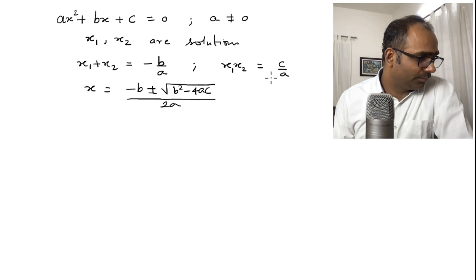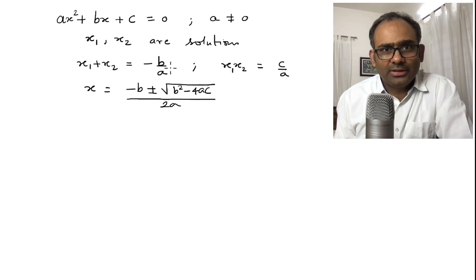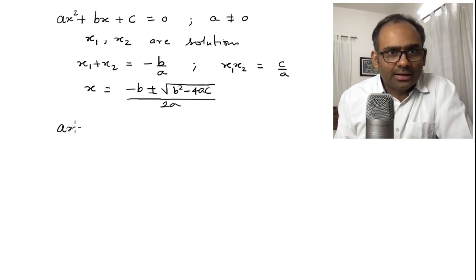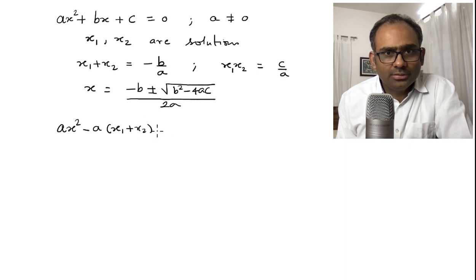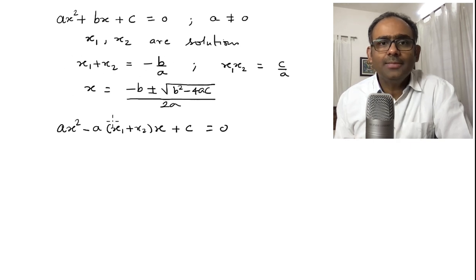Now what I do is I take this property and put it in here. What is b? b is minus a times x1 plus x2 from this relation. I will put it in there. So, I get ax square minus a times x1 plus x2 x plus c is equal to 0. I have just substituted this relation.